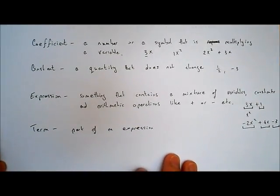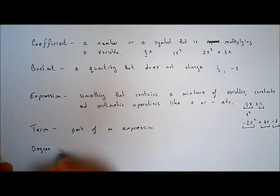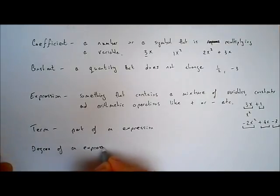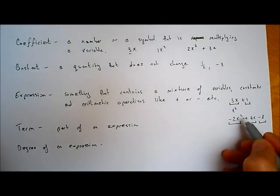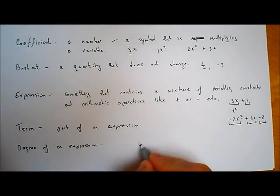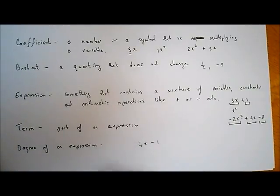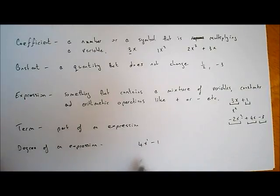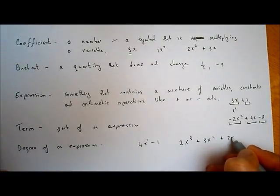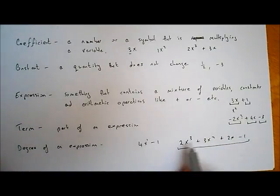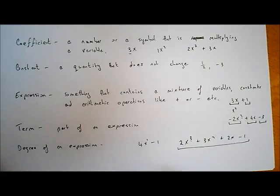The degree of an expression is the highest power in the expression. For minus 2x squared plus 4x minus 3, the degree is 2 because the highest power is 2. For 4x minus 1, the degree is 1 because that's really 4x to the power of 1 — we never write the power of 1, but it is there. If I write down 2x cubed plus 3x squared plus 2x minus 1, this is a cubic expression — the highest power is a cube — so the degree of this expression is 3.